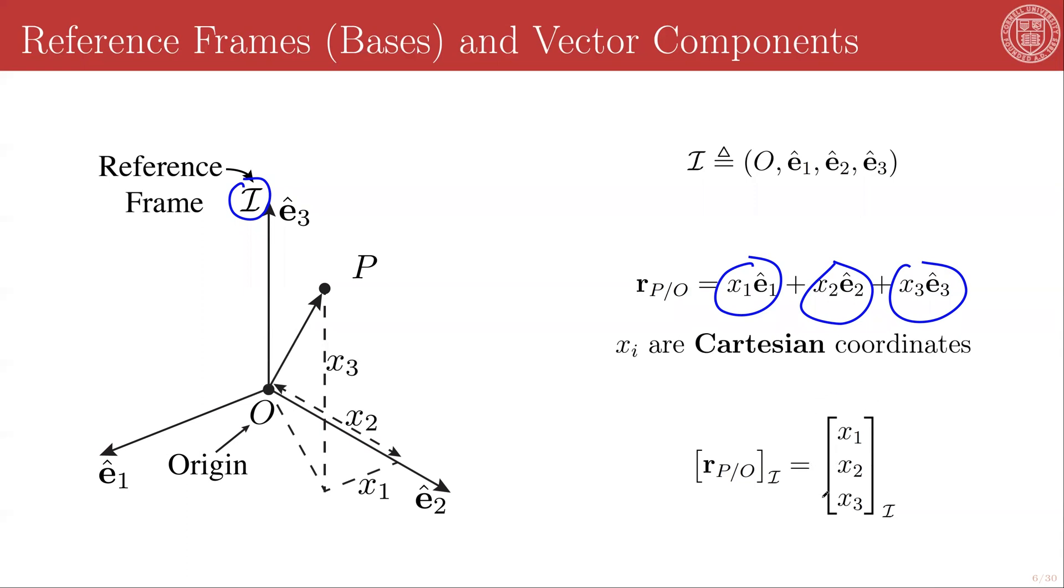So it's really important to understand that if I don't have this subscript here that in my notation defines what frames components I'm writing this in, this definition is incomplete. The way that I denote this is that I put brackets around my vector and I put a subscript defining the frame and then that's the same as me writing out x_1, x_2, x_3. And in our notation this will always be a column vector, for mathematical reasons that will become obvious in a little bit.